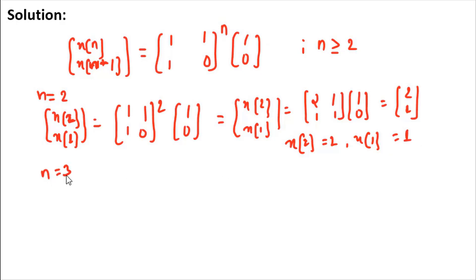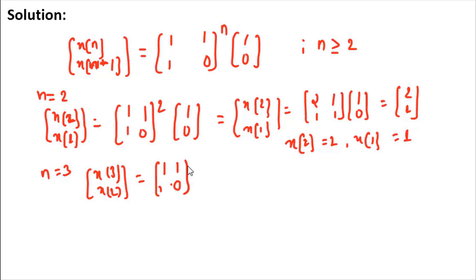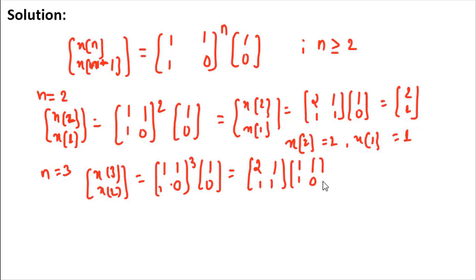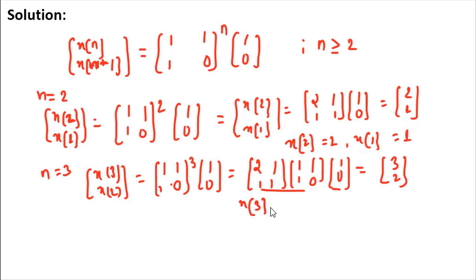Similarly, when you put n = 3, you get [x[3], x[2]] = [[1,1],[1,0]] cubed times [1, 0]. When you solve this, multiplying [[2,1],[1,1]] by [[1,1],[1,0]] and then by [1, 0], you get x[3] = 3 and x[2] = 2.